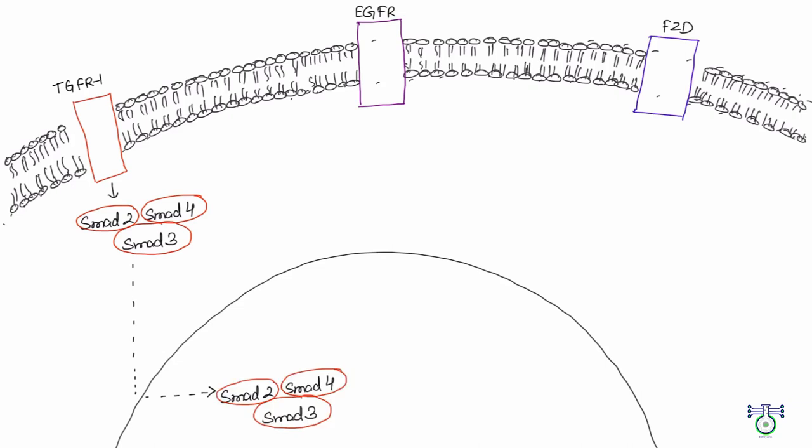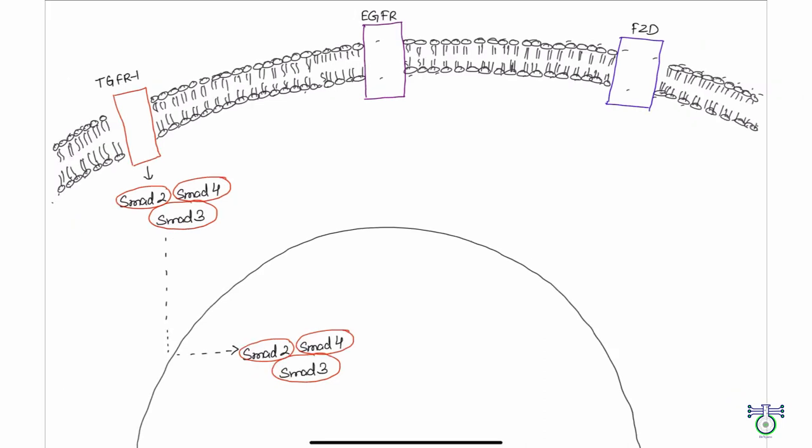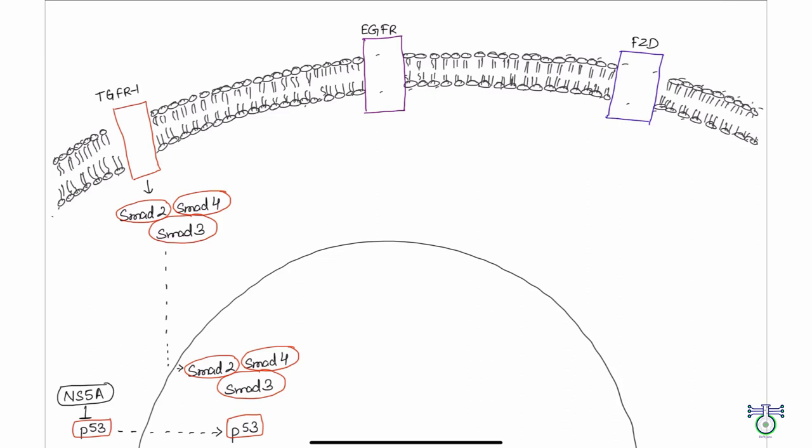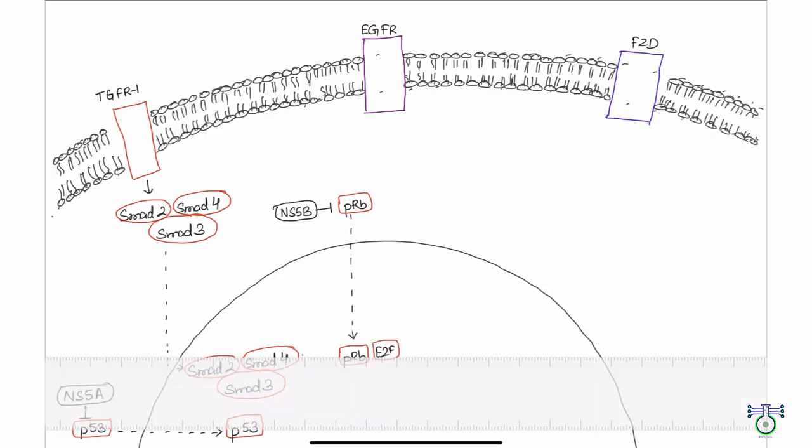This can happen in different ways. First, a protein called NS5A, which is a part of HCV, can keep an important protein called p53 stuck in the wrong part of the cell—the cytoplasm. This prevents another protein called p21 from doing its job, which is to stop cells from growing too much. Another protein made by HCV called NS5B also does pretty much the same thing. It traps another important protein called Rb in the cytoplasm. This frees up another protein called E2F to make genes that help cells grow.